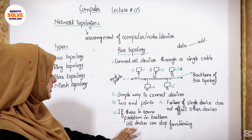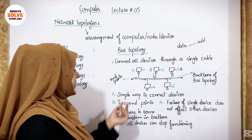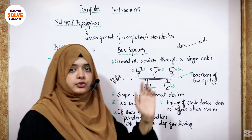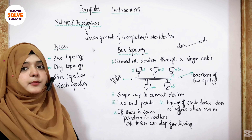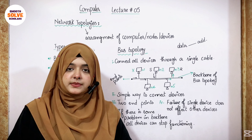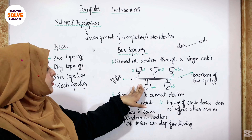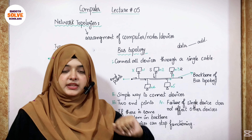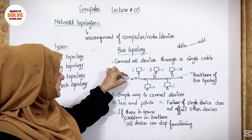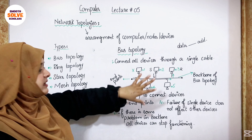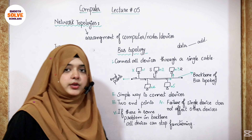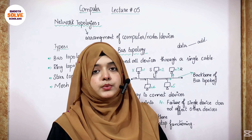If there is some problem in the backbone, all devices can stop functioning. The main backbone's work is to transmit data and move it from node to node. If there is a backbone issue, the entire network will stop working. No node will be able to share data. If the backbone fails, the entire topology fails because all functions depend on it.